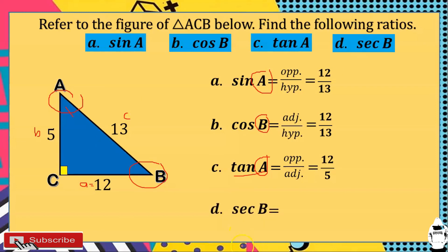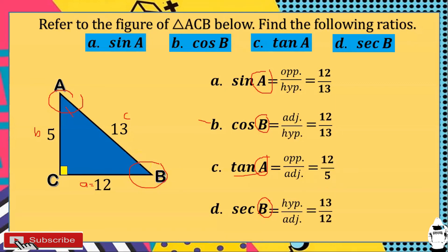Next, secant B. The reference angle is angle B. Since secant is the reciprocal of cosine, and they share the same reference angle, secant B equals hypotenuse over adjacent. The hypotenuse is 13 and the adjacent is 12. So secant B is equal to 13 over 12. That is how to find the ratios from this illustration.